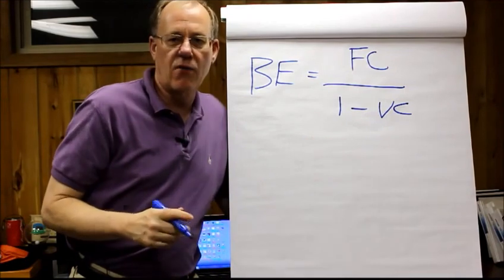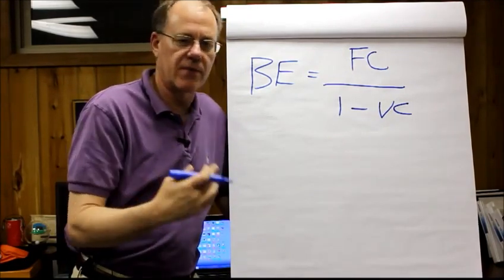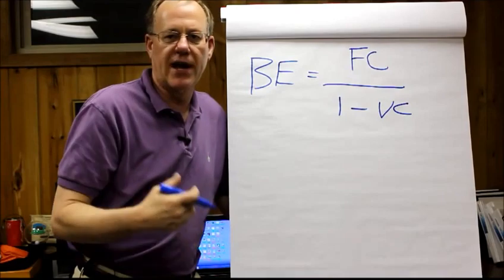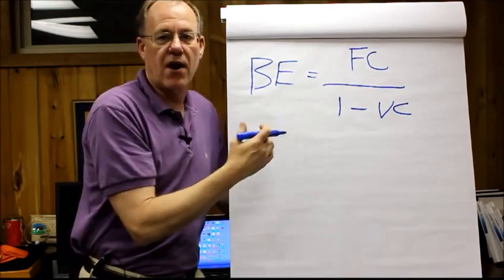The variable cost however is if as we sell one item there is a cost. It might be materials, it might be hours of labor, it might be commissions that will vary.